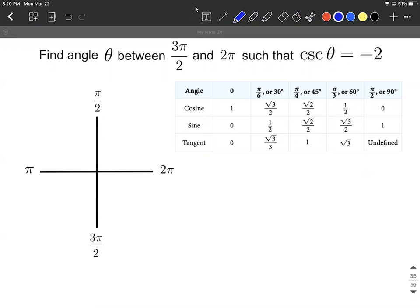As you can see I've already put our quadrantal angles over on the axes over here. So between three pi over two and two pi that means it's going to be fitting into the fourth quadrant. So I'm just going to draw an angle into the fourth quadrant, probably not going to be to scale.